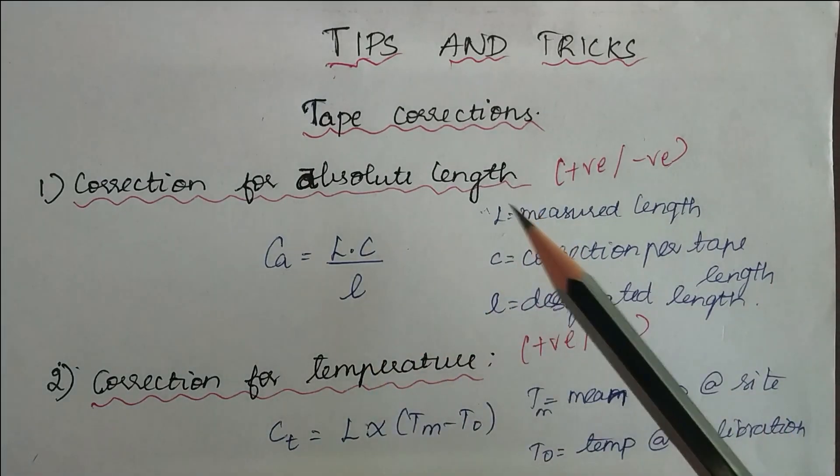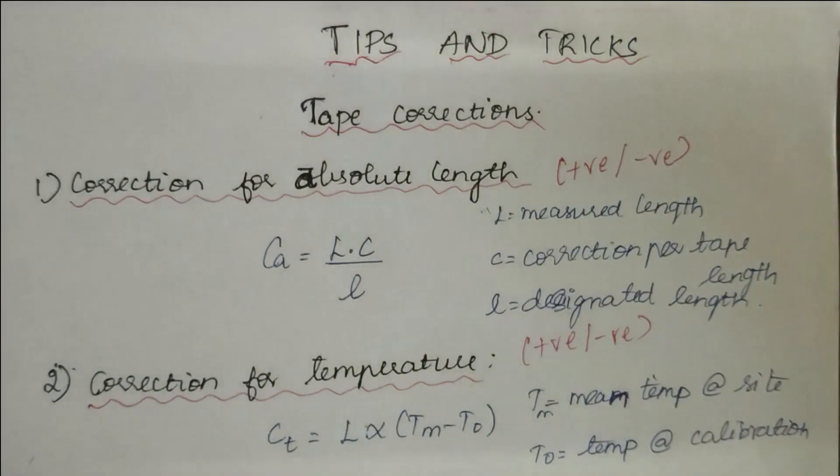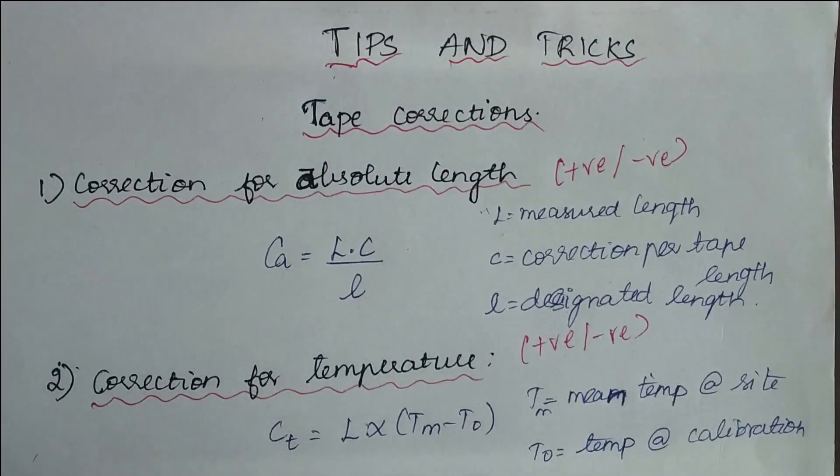First one is correction for absolute length. We already know that if the actual length is greater than or lesser than the designated length, there occurs an error. It can be positive or negative depending upon the condition present there. In case you don't know where the positive and negative corrections will be applied, please check out the previous videos. The links are given in the description.